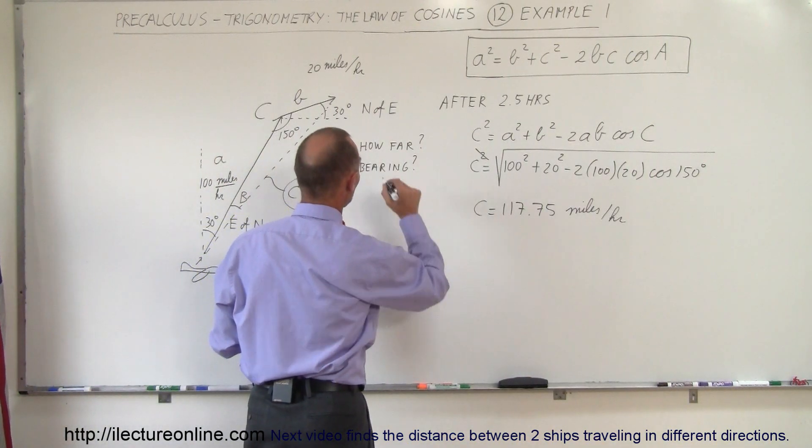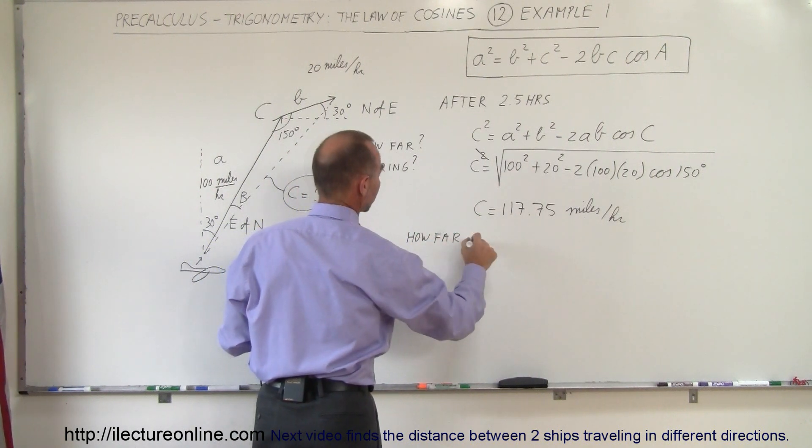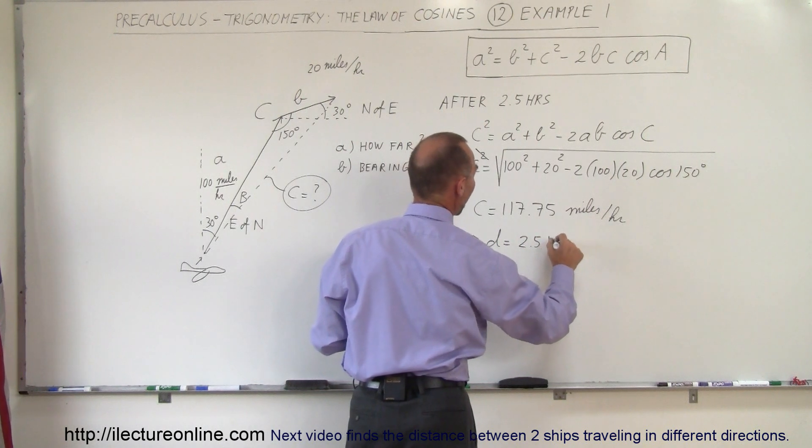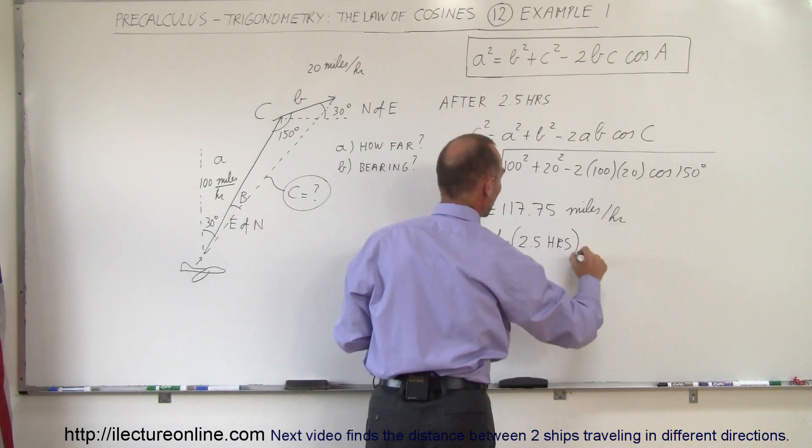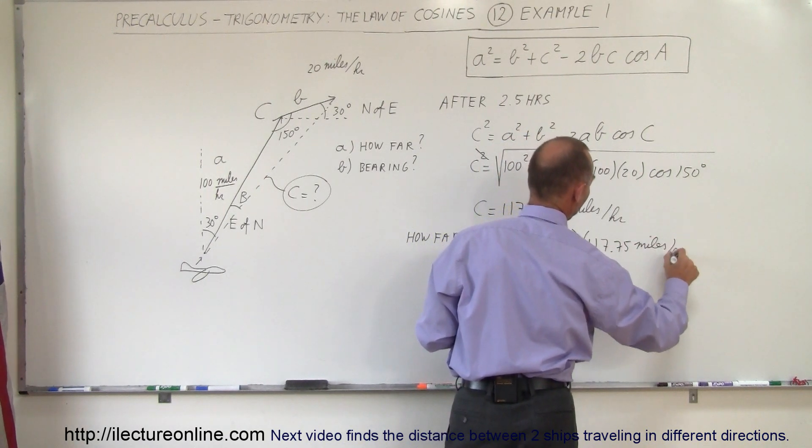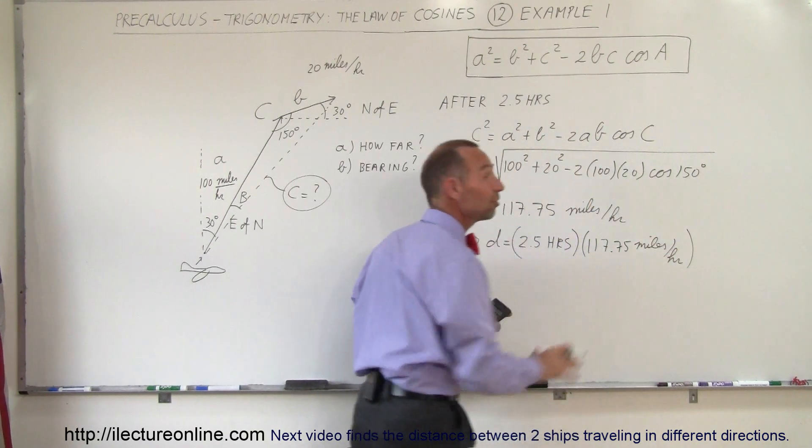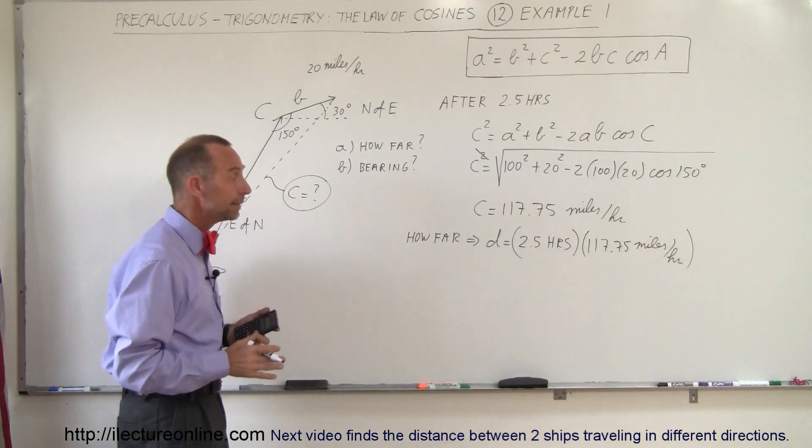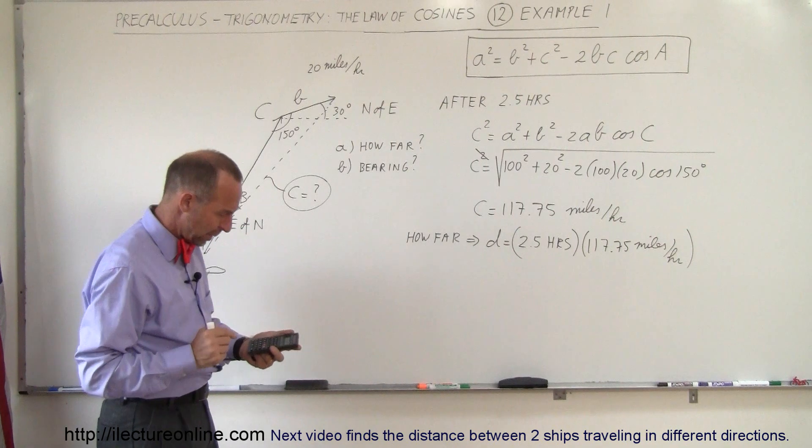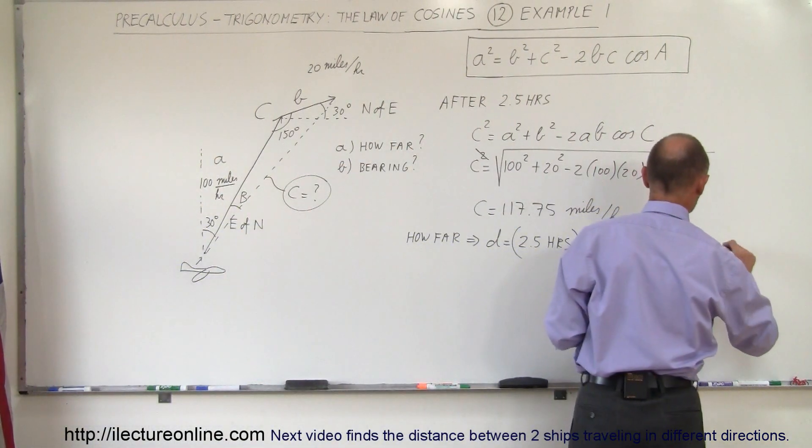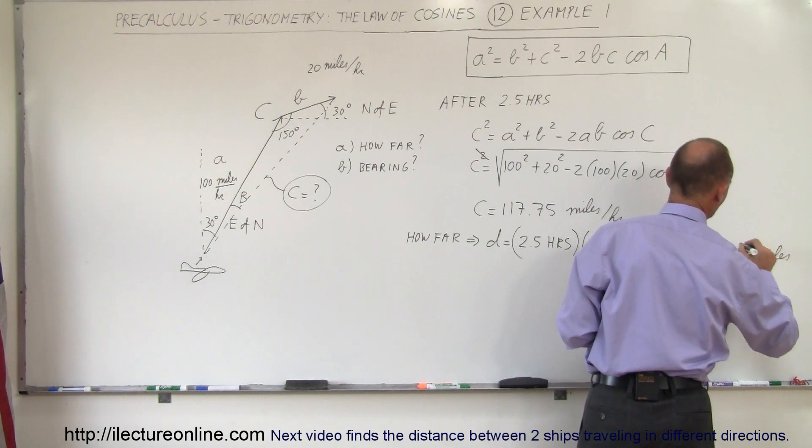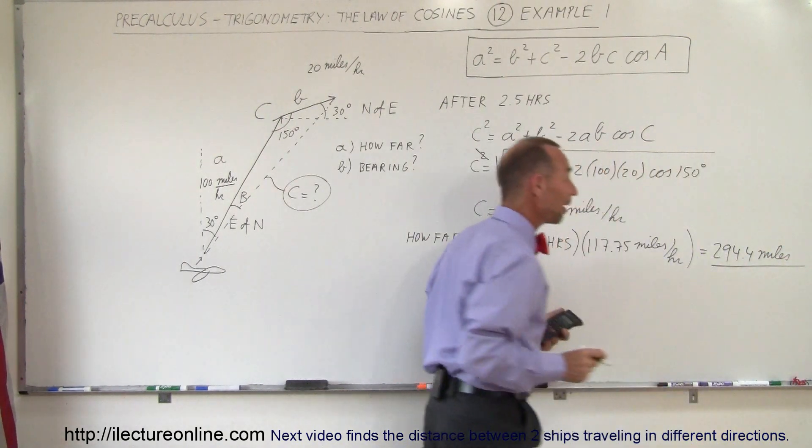After two and a half hours, the distance would be equal to 2.5 hours multiplied times 117.75 miles per hour. So this would be the speed of the plane and the wind combined, multiplied by 2.5 hours, and we get 294.4 miles. So that's how far the plane would be after 2.5 hours of flying.